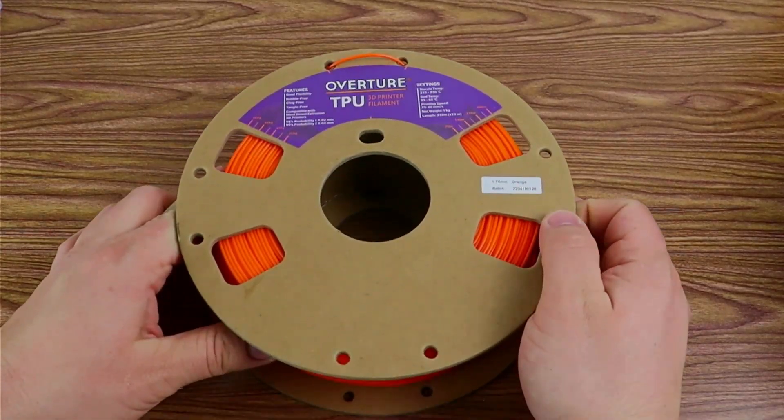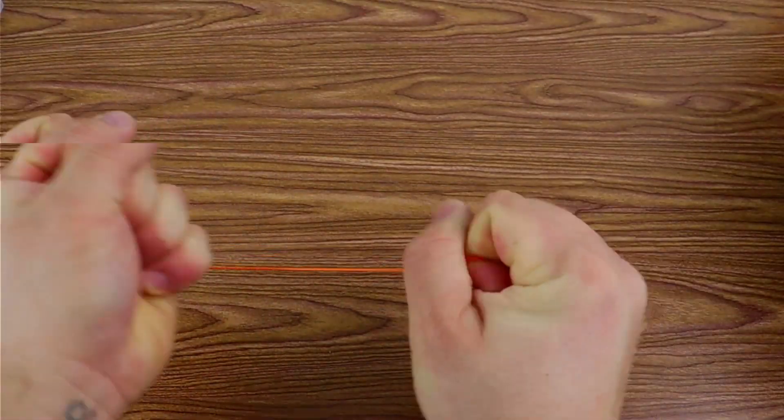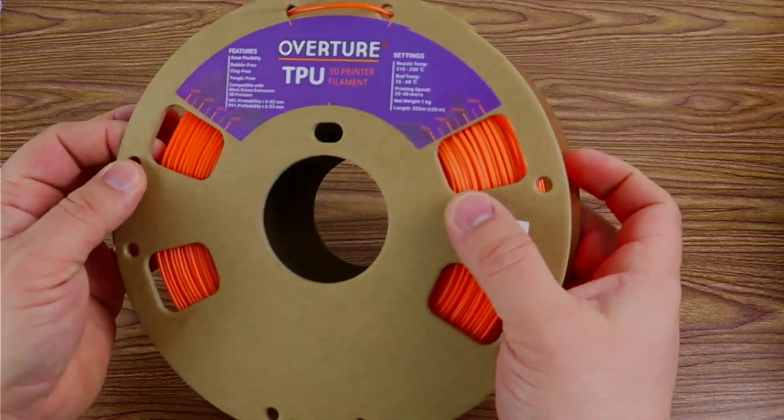For this project we've picked some orange TPU from Overture. This is going to make a nice soft mold that is nearly indestructible. If you have not tried to print with TPU before, you're in for a treat. Not the easiest to print with but very rewarding.